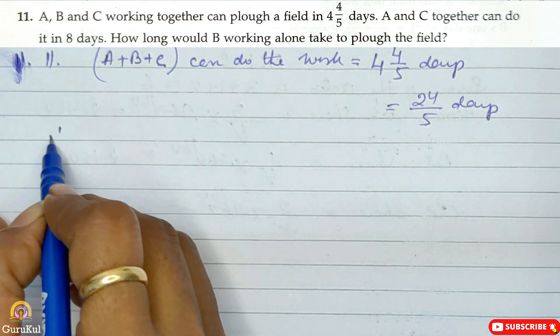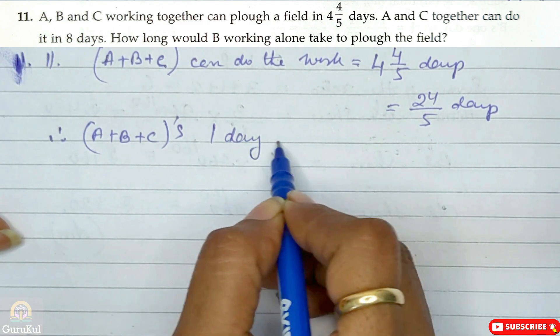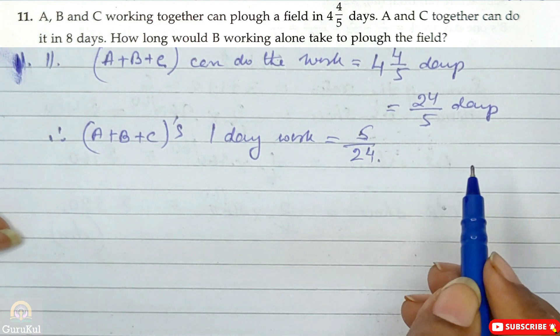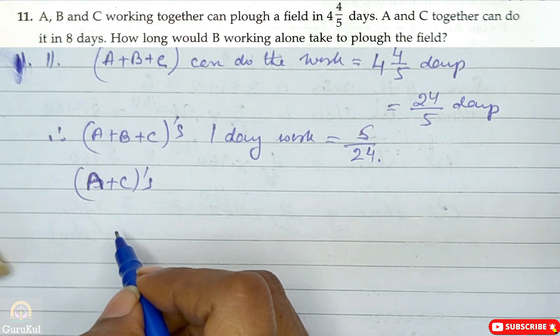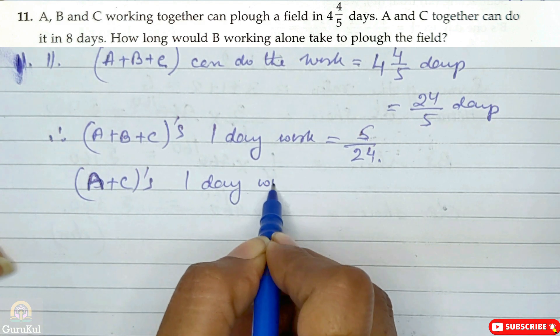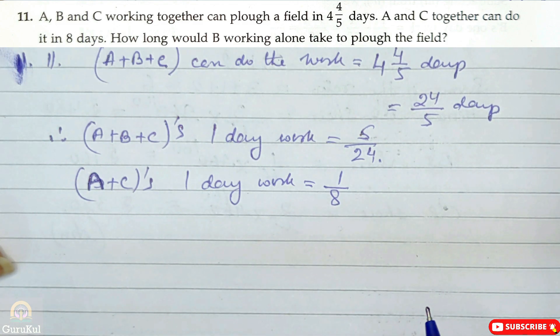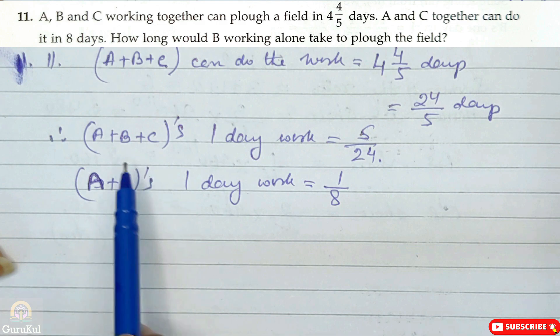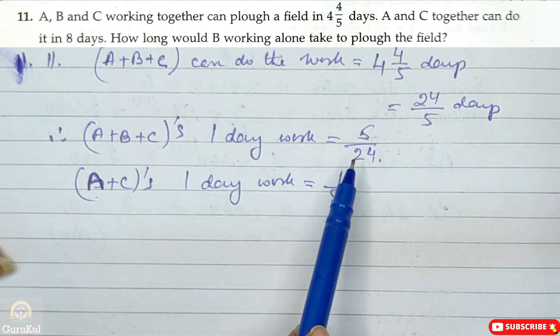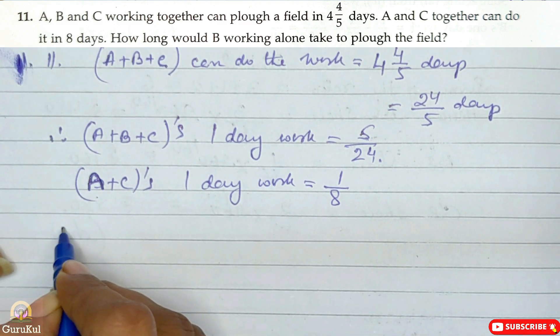They are working together and they can do the work in 4 by 5 days. So therefore, A plus B plus C's one day work will be 5 by 24. So it's given that A and C together can do it in 8 days. So unka one day work nikalte hai. So A plus C's one day work is equal to 1 by 8. Any guess? How can we find B's?